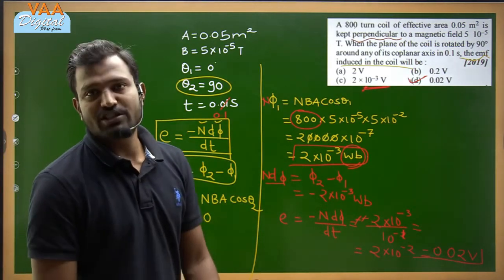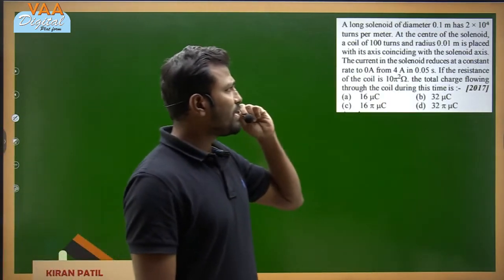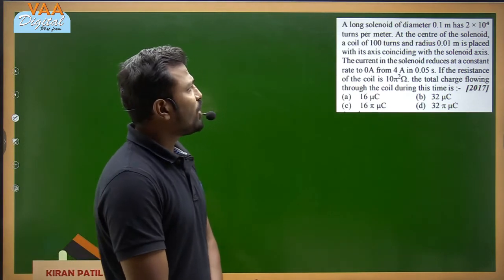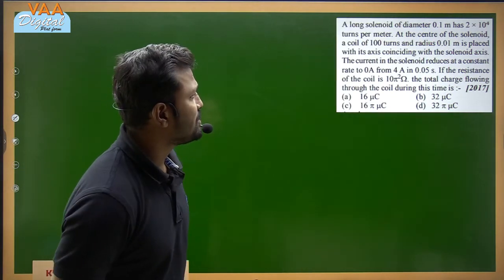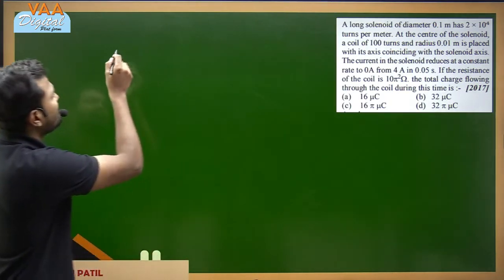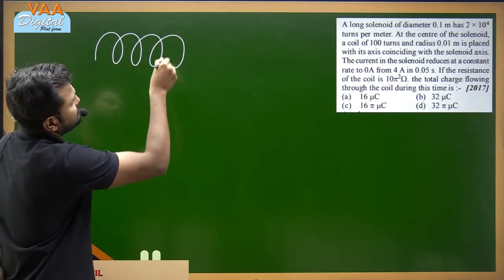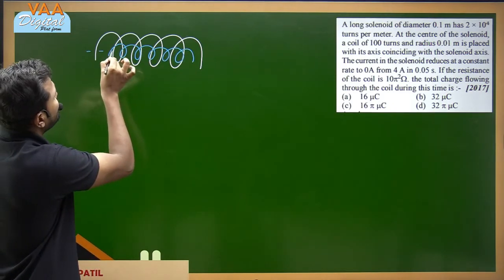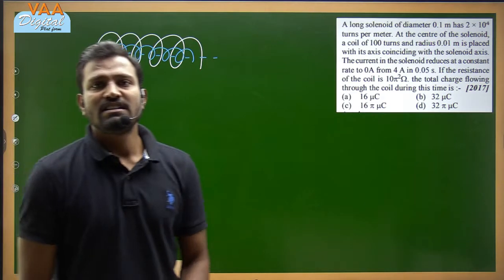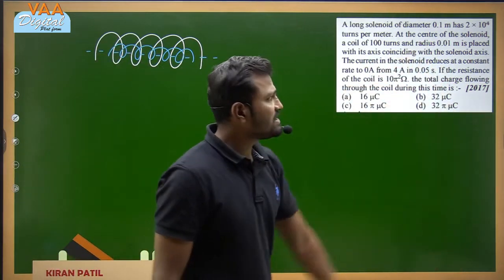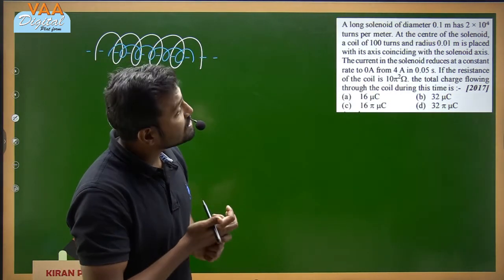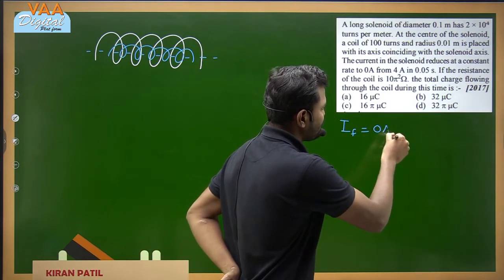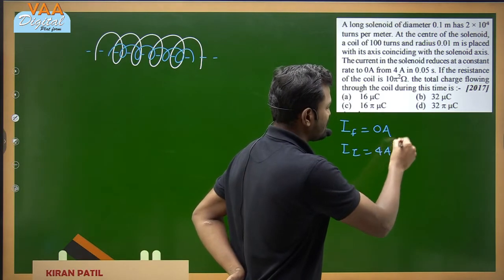Moving to the next question: a long solenoid of diameter 0.1 m has 2×10⁴ turns per meter. At the center, a coil of 100 turns and radius 0.01 m is placed with its axis coinciding with the solenoid axis. The current in the solenoid reduces at a constant rate from 4 A to 0.